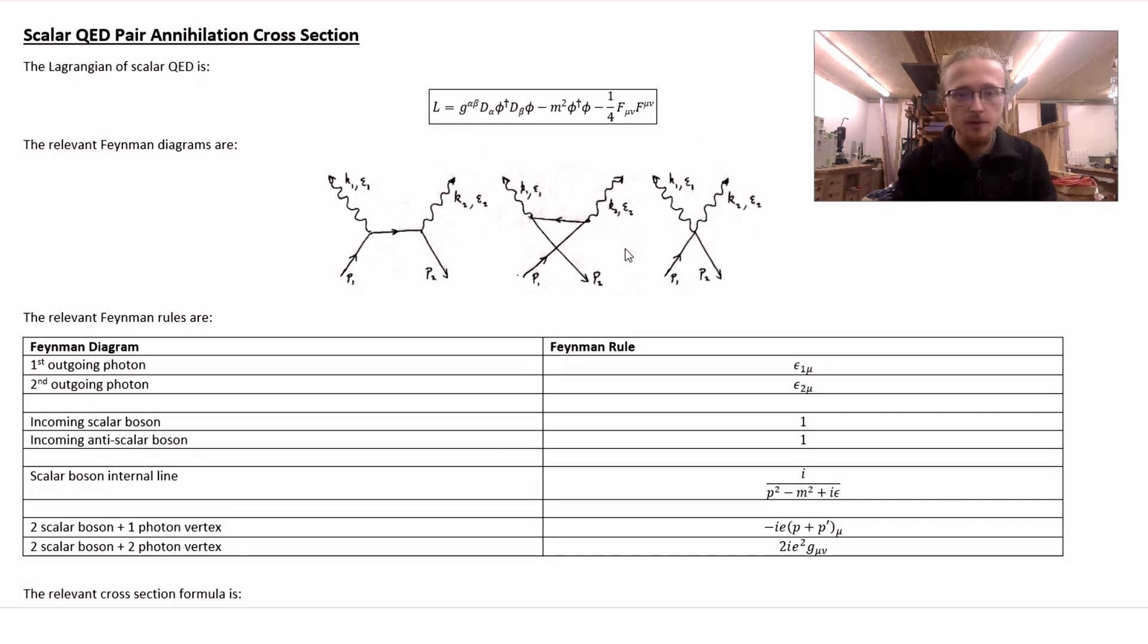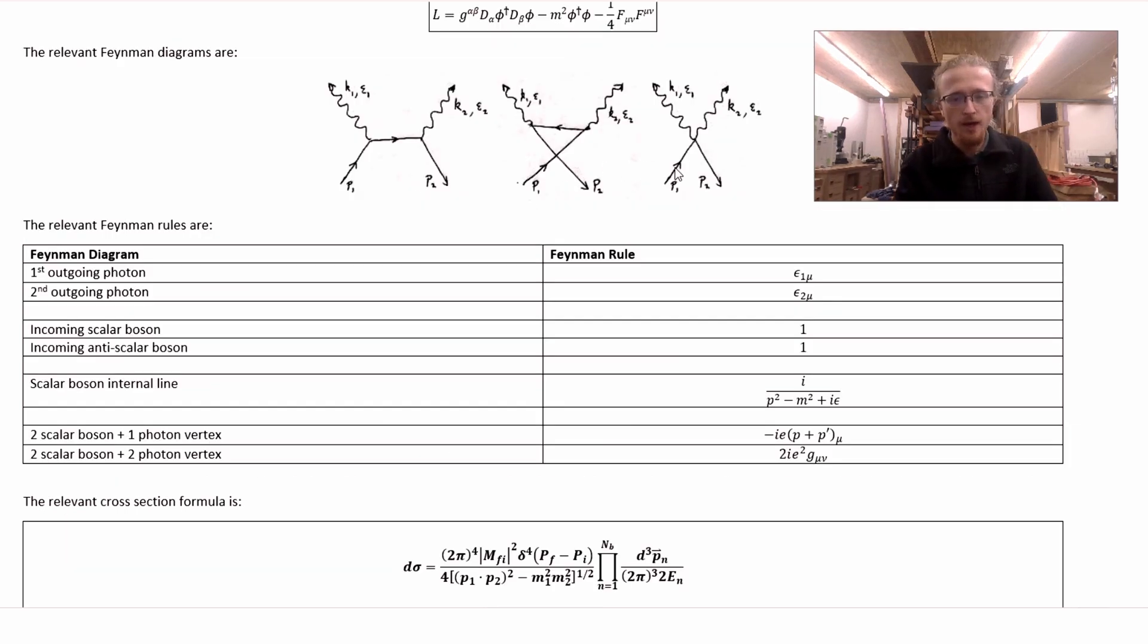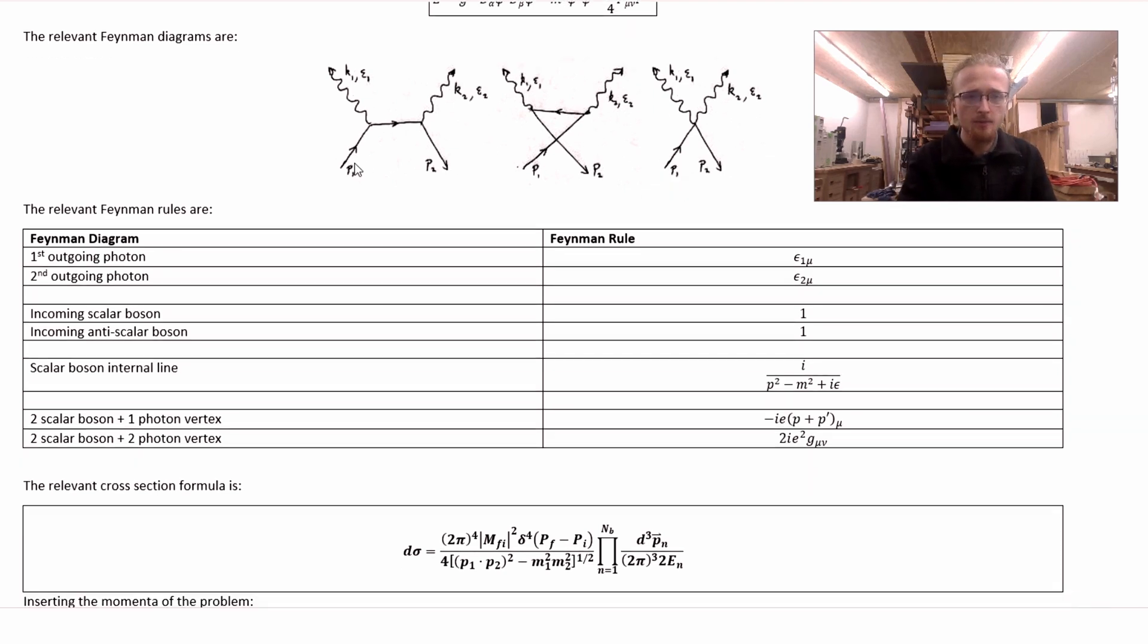What we're going to do then is we're going to use these Feynman diagrams and these Feynman rules to write out the Feynman amplitude. Then we'll come down and use this formula here to get the differential scattering cross-section from it. At least that's the general idea. In practice, we do have a bit of extra processing that we need to do with this formula here before we're ready to even start messing with the Feynman amplitude, some pre-processing to get the specific general formula that we need to plug the Feynman amplitude in to get the standard result. Coming back up to the Feynman diagrams, we can see I've labeled the incoming and outgoing momenta and polarization vectors. The momentum vectors are the ones we're interested in right now.